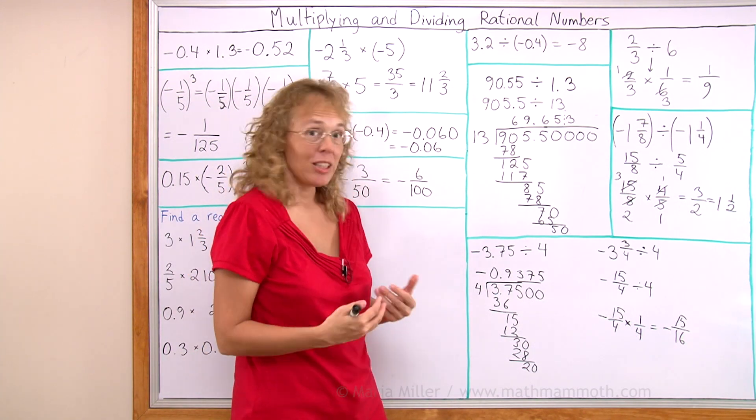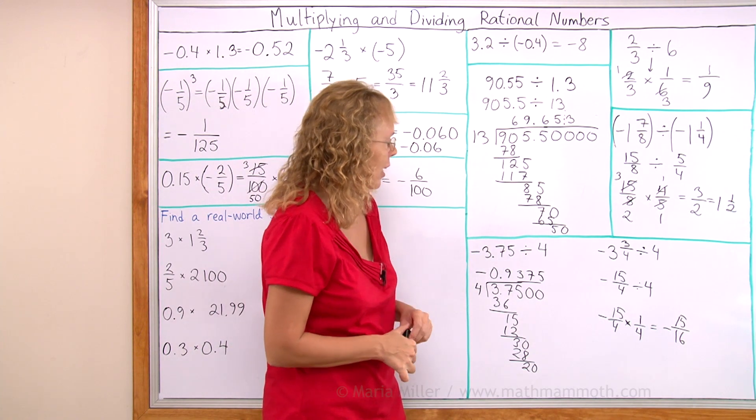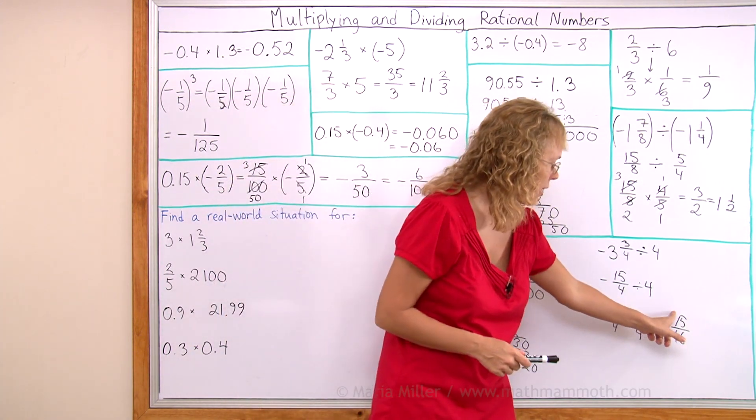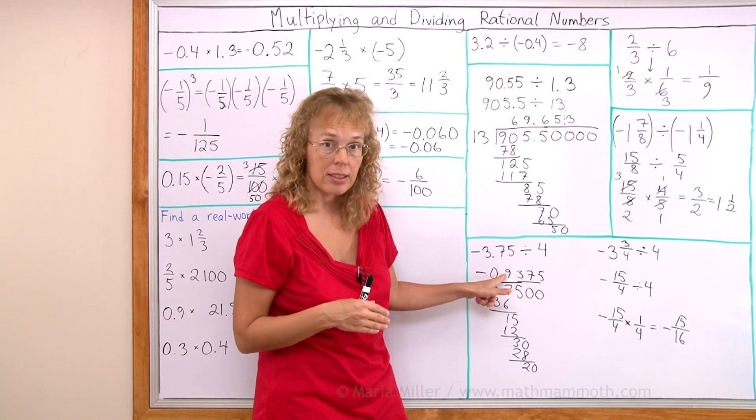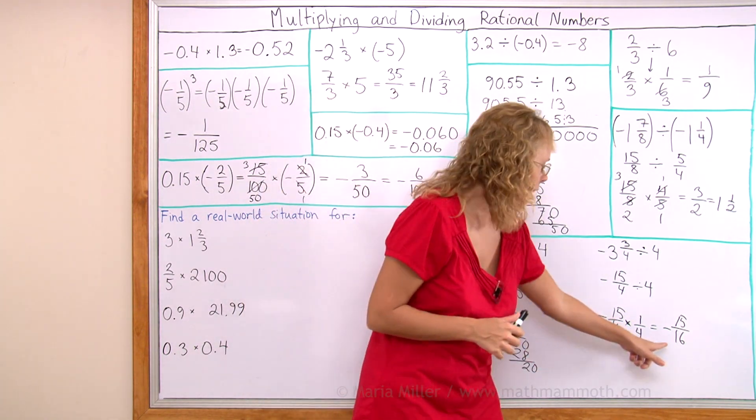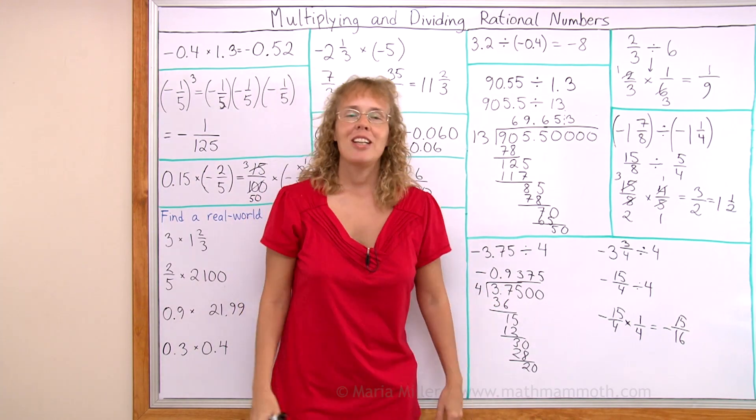And notice, the answers look totally different, right? But they must be equal if I did my calculations right. And indeed, if you change this negative 15 over 16 into a decimal, you will get exactly this. You can check it with a calculator. So they are equal, even though they look different. Okay, we're all done, and I hope this was helpful.